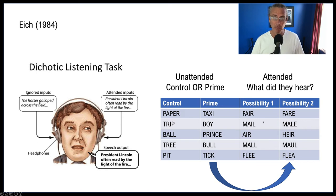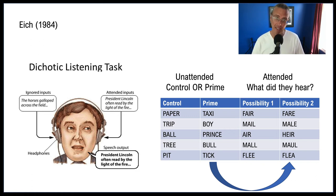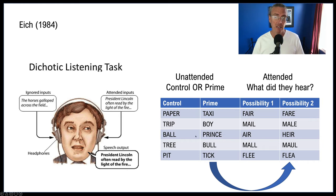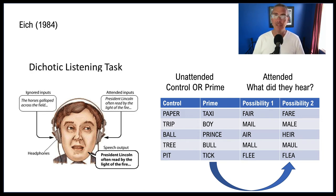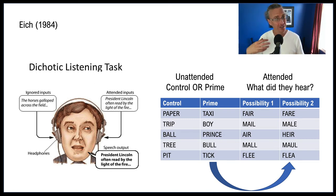The answer is yes — at high rates. By presenting these primes, even though participants don't hear them and say they don't remember them, they nonetheless bias how the attended word is processed. For example, presenting 'prince' at the same time as they hear 'air' causes them to tend to write it H-E-I-R. The prime — even though not consciously heard — biases how they process the word they are consciously hearing.